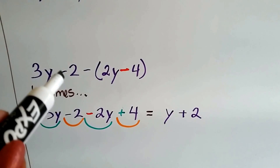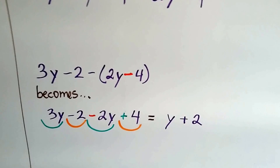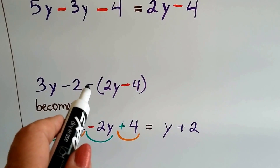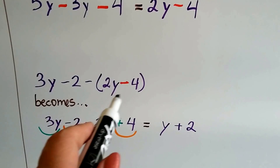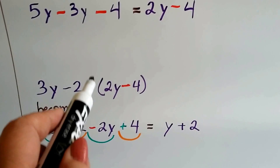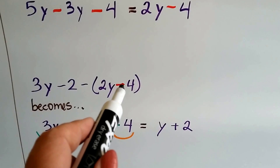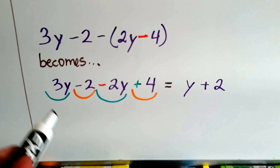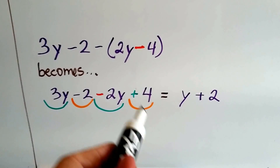Let's try it again. We've got 3y minus 2, minus, and then 2y minus 4 in parentheses. We're going to look at just this minus 2y minus 4 part, and make this minus sign change the signs of what is inside the parentheses — then it goes away. A minus times a positive 2y makes it negative 2y, and a minus times a negative 4 makes it a positive 4. Now we combine like terms: 3y minus 2y is just y, and negative 2 plus 4 is positive 2.